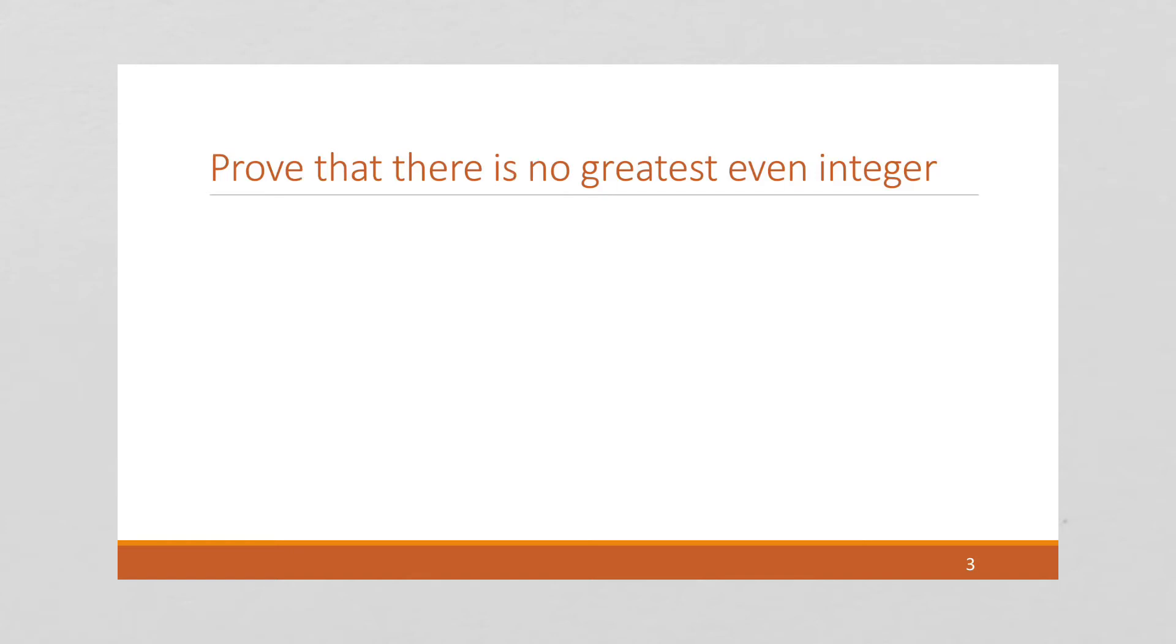So, there's a couple of ways to do this proof. So, if I'm going to start by noticing that this is not a universal conditional statement, and this is one of those examples that's difficult to put in the form of a universal conditional statement. For all n is an even integer, there's a bigger even integer? No.